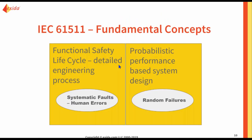In IEC 61511, and in all functional safety standards, there are two fundamental concepts. First, protect against what are called systematic faults — mostly human errors like software bugs, bad calibration instructions, and things of that nature. Second, protect against random failures. A detailed engineering process is the defense mechanism against systematic faults, and a probabilistic performance-based system design is the defense against random failures.